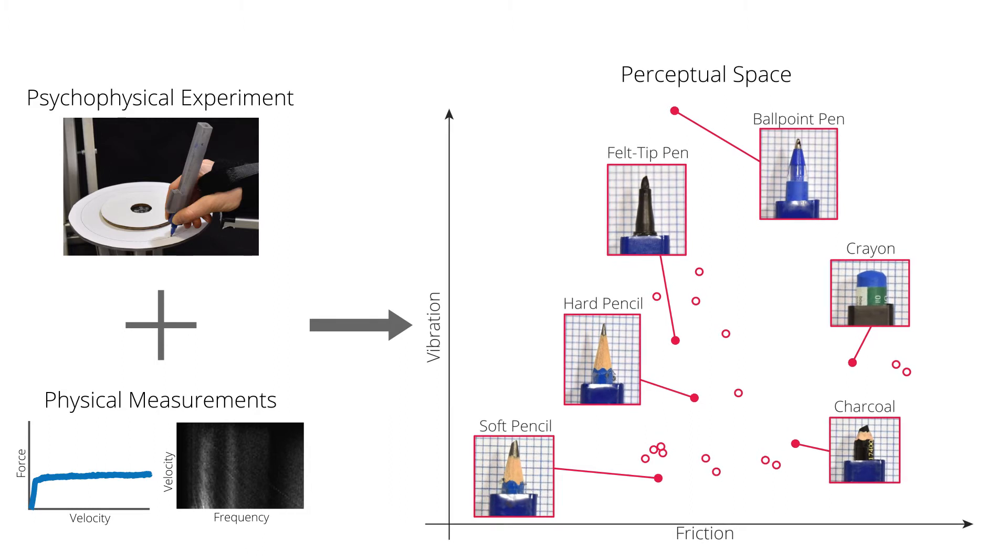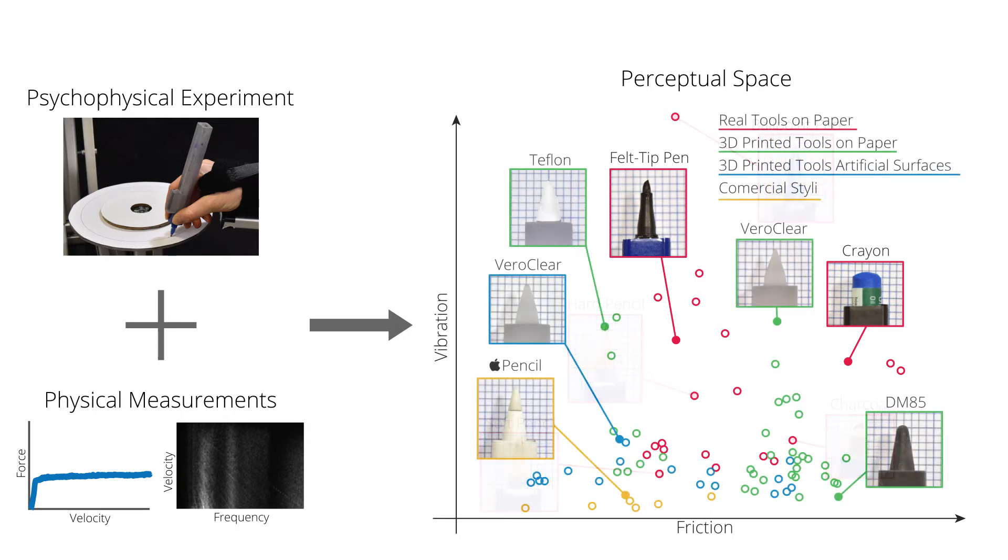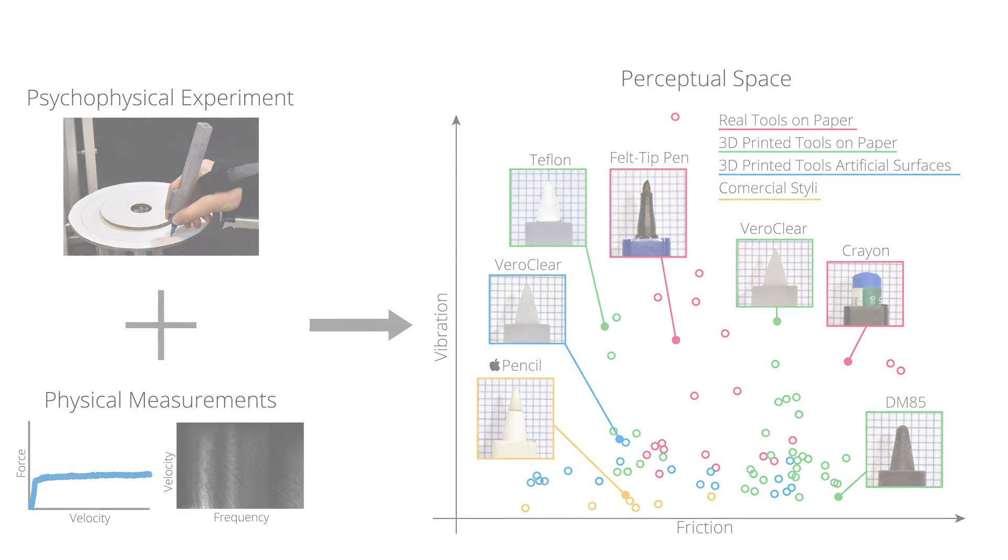The result is a so-called perceptual space, where distances correspond to perceived dissimilarity. Thanks to the correlation with physical properties, we can put new samples into the space.